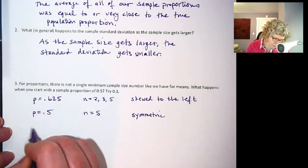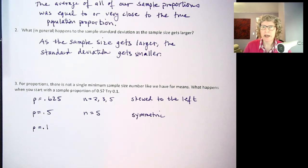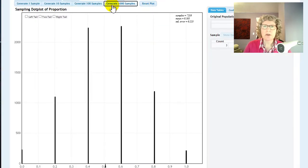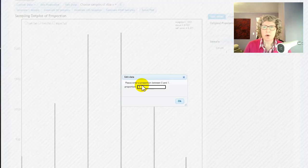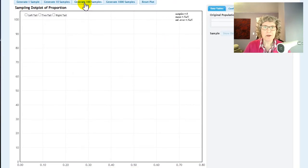And then it says try 0.1. So that would be if only 10% of our population was in Oregon. So let's change our proportion, go to edit proportion to 0.1. Let's see what happens.